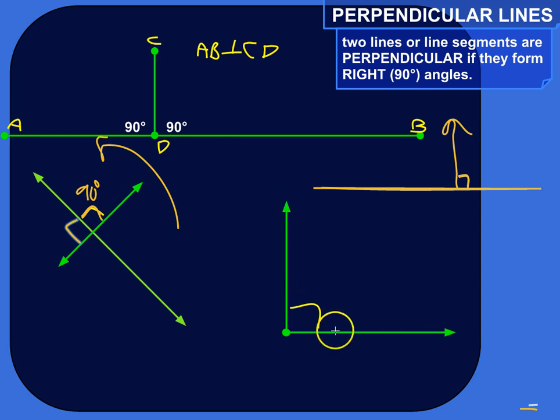We've got two perpendicular rays here. They form a 90 degree angle. I've got a straight line here, this line segment AB, and this line segment CD is perpendicular to it because the two form a 90 degree angle there.